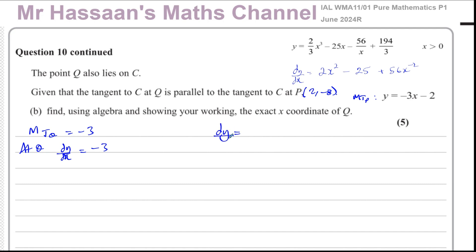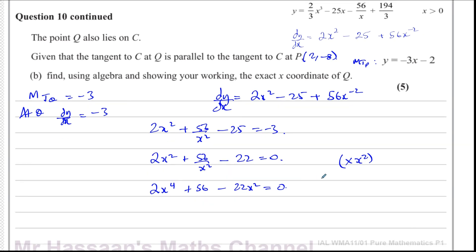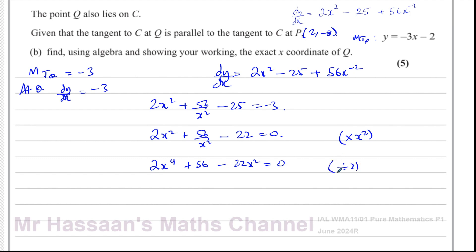We take our gradient function dy/dx equals 2x squared minus 25 plus 56x to the power of negative 2, and equate it to negative 3. So 2x squared plus 56 over x squared minus 25 equals negative 3. Adding 3 to both sides: 2x squared plus 56 over x squared minus 22 equals 0. Multiplying both sides by x squared to eliminate the fraction gives 2x to the power of 4 plus 56 minus 22x squared equals 0. Dividing by 2 gives x to the power of 4 minus 11x squared plus 28 equals 0.